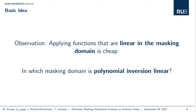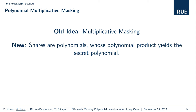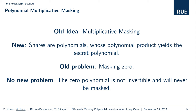The answer is the polynomial multiplicative domain, where shares are polynomials and their polynomial product yields the original secret polynomial. This is quite an old idea — multiplicative masking was originally introduced for masking the AES S-box. People working in side channel analysis will note a well-known problem: masking zero. But this is not a problem for us because the zero polynomial is never masked since it is not invertible and will never be an input to our algorithms.